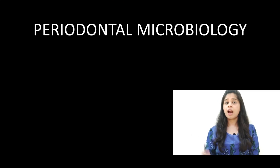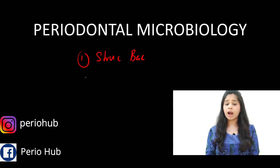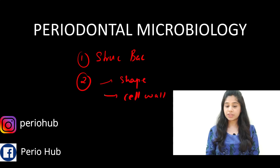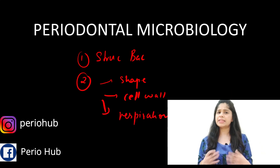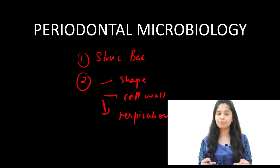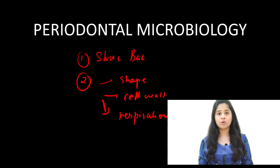With this we come to an end of the basics of periodontal microbiology. Today we spoke about the structure of bacteria and how bacteria can be classified based on shape, cell wall type, and type of respiration. The next video will specifically discuss microorganisms associated with periodontal disease. If you liked this video, please hit the like button, subscribe to this channel, and let us know in the comments. This is Periohub signing off.